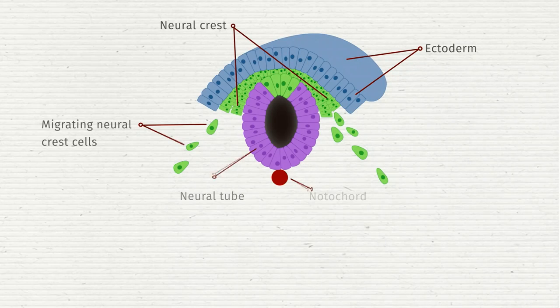The neural crest is a population of multipotent embryonic cells unique to vertebrates, which migrate from the dorsal neural tube early in development to give rise to a diverse array of derivatives.